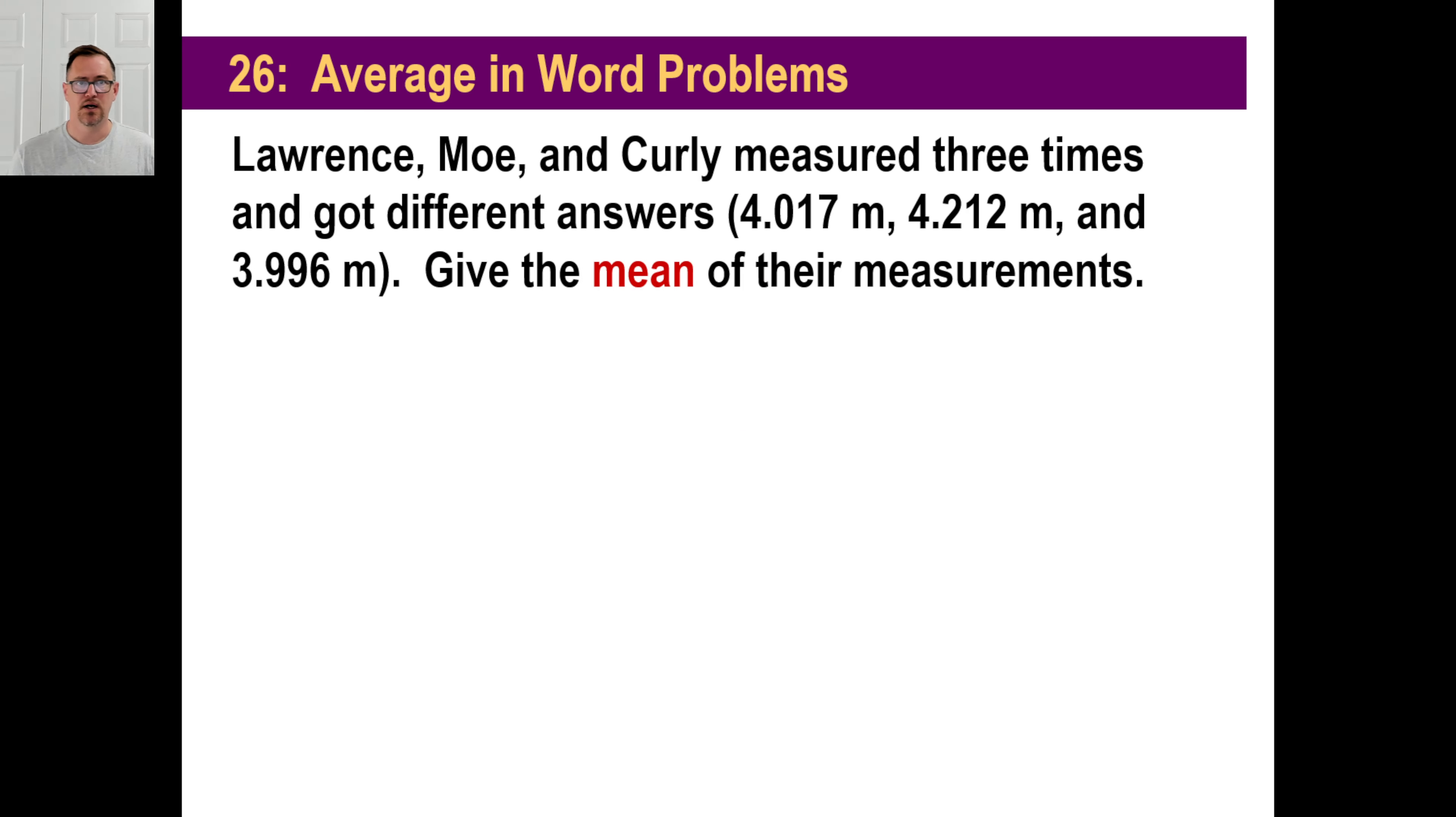Let's do another one. Very practical one. Lawrence, Moe, and Curley measured three times and got different answers. And there are their answers. Give the mean of their measurements. Now mean is another word for what? Average. So not going to do the arithmetic here. You just take all three of those, add them together, then divide by three. Now make sure you should not get an answer that is smaller than this, because that's the smallest value. You should also not get a number that is larger than this because that's the largest value. It's going to be somewhere right around four meters.